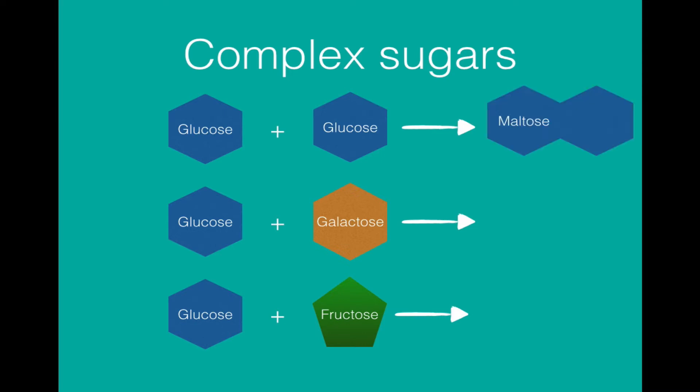Glucose and glucose form maltose. Glucose and galactose form lactose, which is found in milk. And glucose and fructose produce sucrose, which is plant sugar.